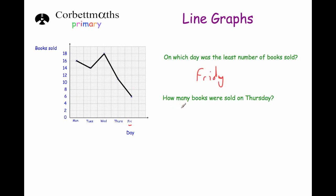The next question says: how many books were sold on Thursday? So if we go to Thursday, up and across, we've got this number. Just below it is 10, just above it is 12, and it's halfway between them, so that's going to be 11. So 11 books were sold on Thursday. It's very important we know what we're going up in — we're going up in twos, and it was halfway between 10 and 12, so that's 11 books.